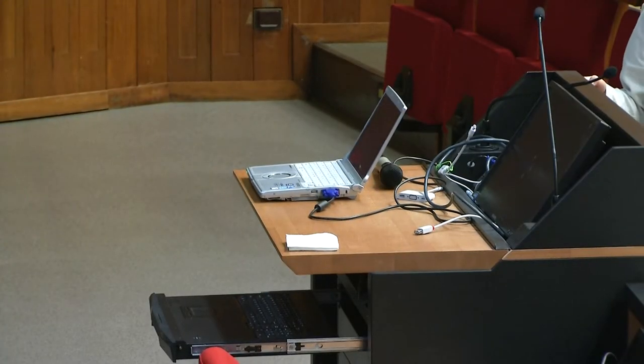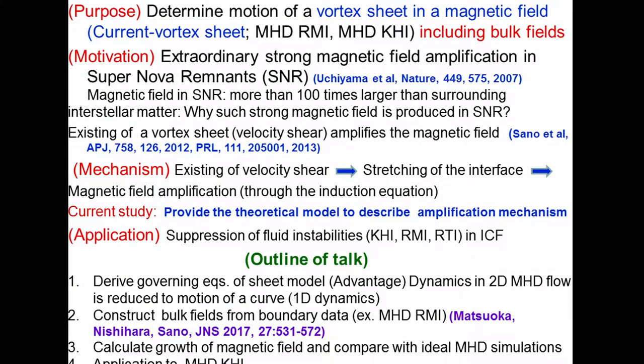The motivation of my study is the extraordinarily strong magnetic field amplification in supernova remnants. In 2007, the magnetic field in supernova remnants was found to be more than 100 times larger than the surrounding interstellar matter. There is a question: why is such a strong magnetic field produced in supernova remnants? These researchers gave the answer by numerical simulations — the existence of a vortex sheet, that is, the existence of a velocity shear, amplifies the magnetic field.